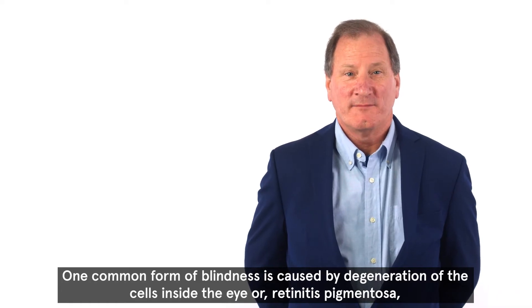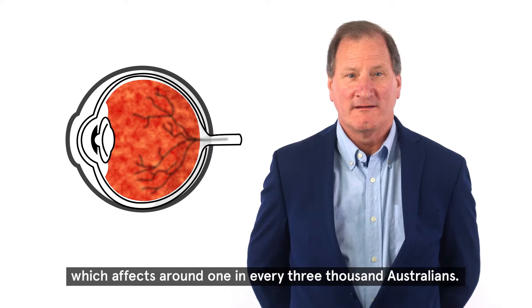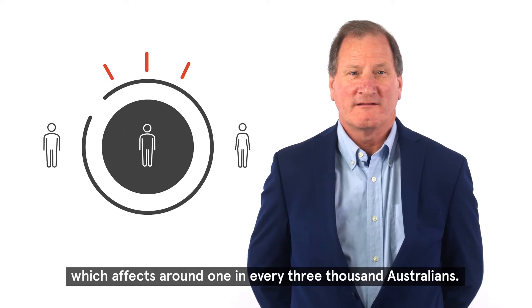One common form of blindness is caused by degeneration of the cells inside the eye or retinitis pigmentosa, which affects around one in every 3,000 Australians.